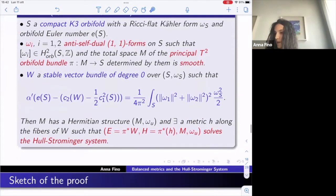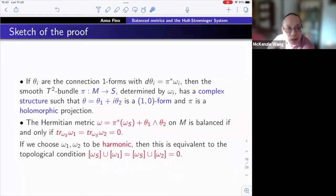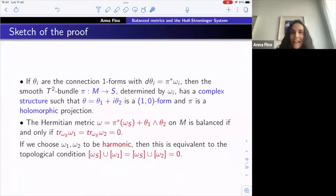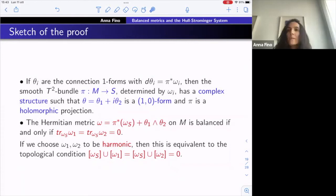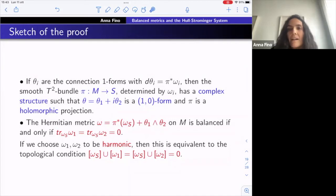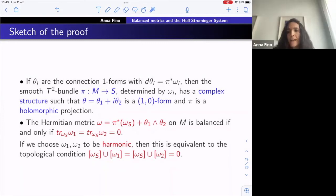Here is a sketch of the proof. We start with connection 1-forms θᵢ with dθᵢ = π*(ωᵢ), giving a smooth T²-bundle with a complex structure where the (1,0)-form is θ₁ + i θ₂. The condition for the Hermitian metric to be balanced — taking omega as the pullback of the orbifold Kähler form plus θ₁ ∧ θ̄₁ — is equivalent to the trace of ω₁ ∧ ω₂ with respect to the K3 orbifold metric being zero; and if ω₁, ω₂ are harmonic, this is equivalent to the topological condition [ω₁] ∪ [ω₂] ∪ [Ω_S] = 0.